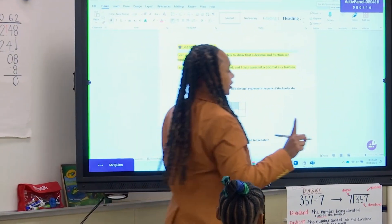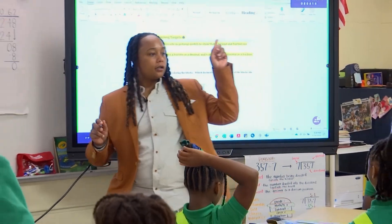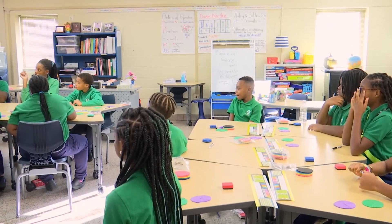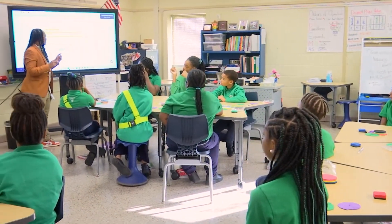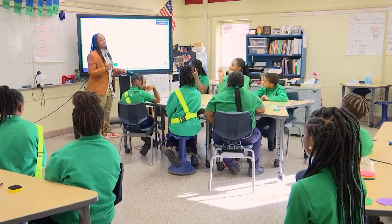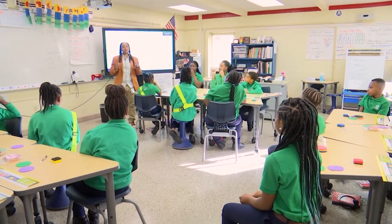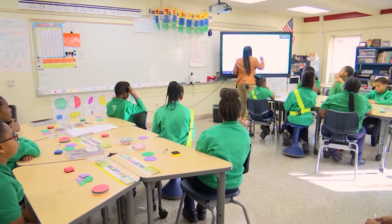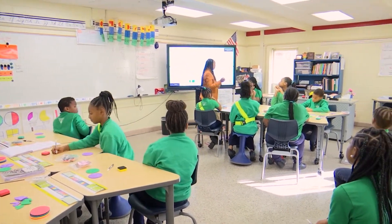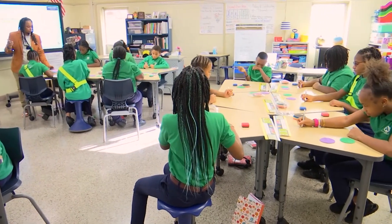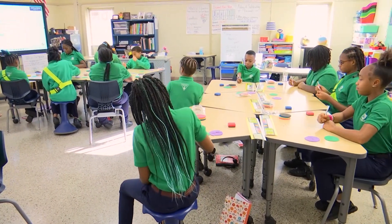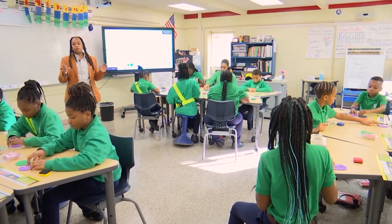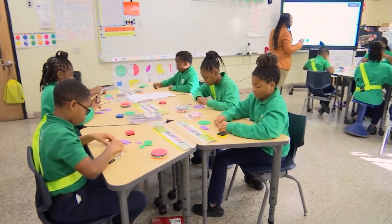Kenia says we have four shaded blocks. What would the four shaded blocks represent? The numerator. What's the numerator, class? Four. And where is the numerator — the top or the bottom? The top. It's the top number, so that's going to be a four. You should be writing that on your desk. You also have fraction pieces on your desk, so if you want to represent this same fraction using the fraction pieces, you may do so.